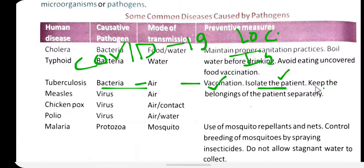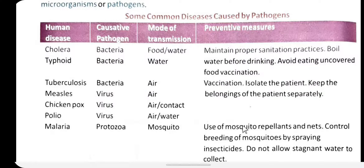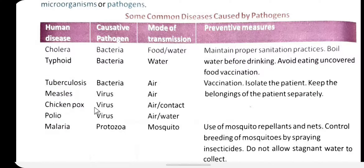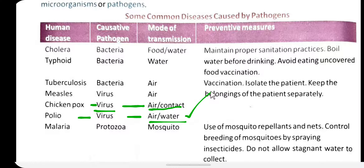Measles is caused by a virus and spreads through air. The preventive measure is to keep the belongings of the patient separately. Chickenpox is also caused by a virus and spreads through air and contact. Polio is also caused by a virus, and we use the polio vaccine against it.